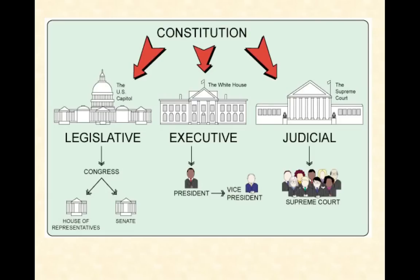For visual learners, here is a graphic of our three branches of government. At the top we see the Constitution — our rule book, you could say. Then we have the legislative branch, made up of the House of Representatives and the Senate. We have the executive branch, led by the president, the vice president, and the cabinet — his or her group of advisors. Then we have the judicial branch, made up of the Supreme Court and our Supreme Court justices.